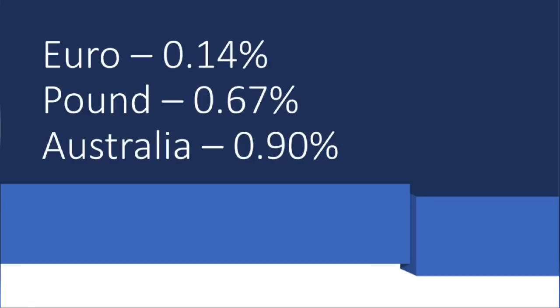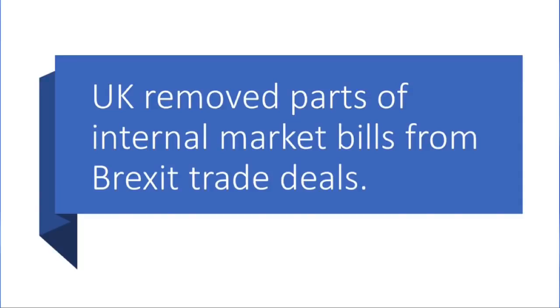The euro is going to be 0.14% strength. The pound losses are going to be 0.61%. If you have the Australian dollar, it is 0.90% of the Australian dollar. So the foreign currencies are going to be positive. Some investors are concerned about it. The Australian dollar — the consumer confidence report is at a 10-year high.